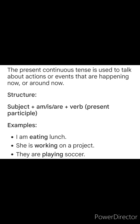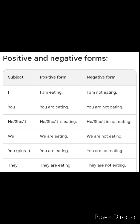The present continuous tense is used to talk about actions or events that are happening now or around now. Its structure is: subject plus am, is, or are, plus the verb in present participle form. Examples: I'm eating lunch, she is working on a project, they are playing soccer. The positive and negative forms are given here in a tabular form.